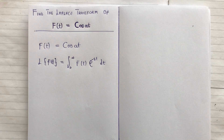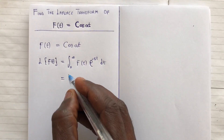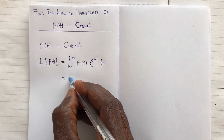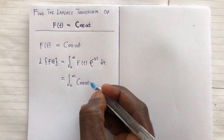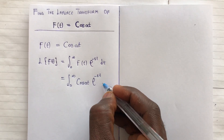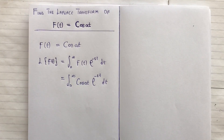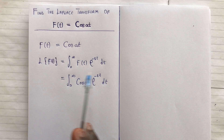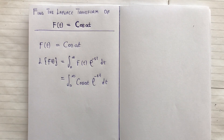For this one we substitute cos(at) in, and we have the integral from zero to infinity of cos(at) times e to the power minus st dt. This becomes a product function, so we need to apply integration by parts. Integration by parts is a very long and lengthy method, so we will use a different method here.